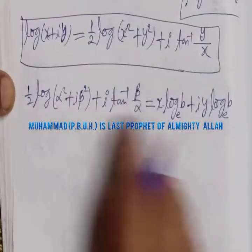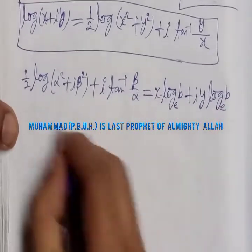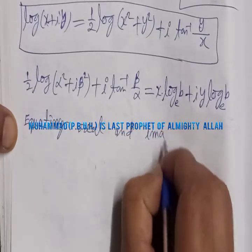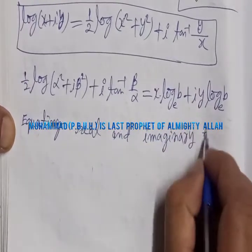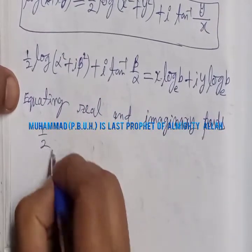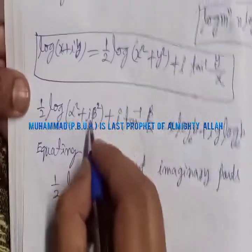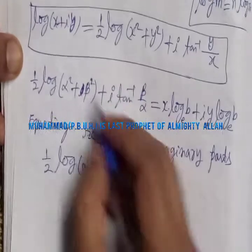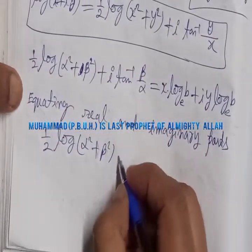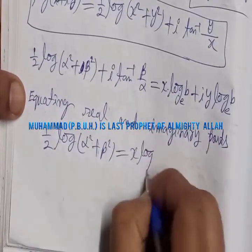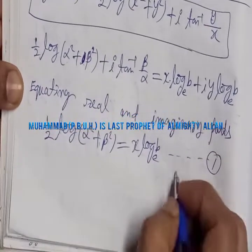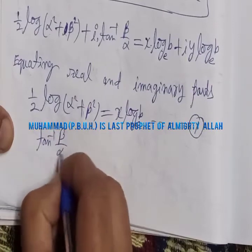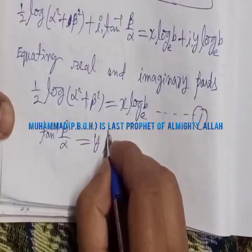When two complex numbers are equal, their real parts are equal and their imaginary parts are equal. Equating real parts: (1/2)·log(α² + β²) = x·log b — this is equation (1). Equating imaginary parts: tan⁻¹(β/α) = y·log b — this is equation (2).